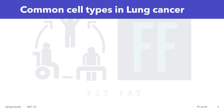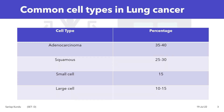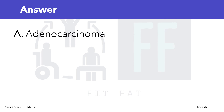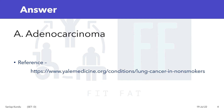Here is a reference of common cell types involved in lung cancer. You can see adenocarcinomas are the most commonly involved cell type, and large cells are the least involved. So the answer to the question is option A: adenocarcinoma. A reference link will also be provided in the description box.